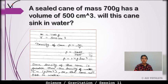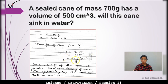Numerical: A sealed cane of mass 700 gram has a volume of 500 centimeter cube. Will this cane sink in water? M = 700 g, V = 500 cm³. Density of cane, rho = M/V = 700/500 = 1.4 g/cm³. Since the density of the cane (1.4 g/cm³) is greater than the density of water (1 g/cm³), the cane will sink in the water.